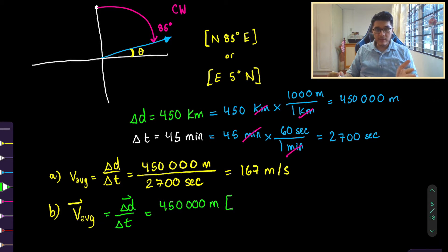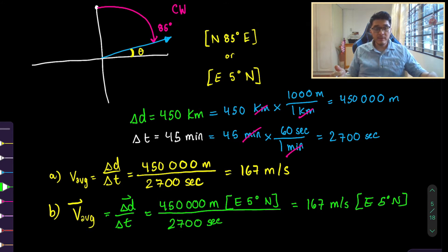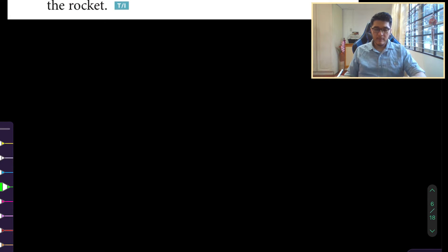So the magnitude is going to be the same. 450,000 meters. Because there's no change in direction, the total distance travel is the length of the displacement vector. But because it is a vector, we have to indicate the direction. We could state it as north going towards east or east going towards north. Both are going to be correct. So let's go east 5 degrees north, and divide this by the time interval. So that should be the same value, 167 meters per second, but now we have a direction of east 5 degrees north.